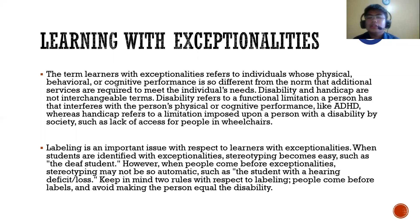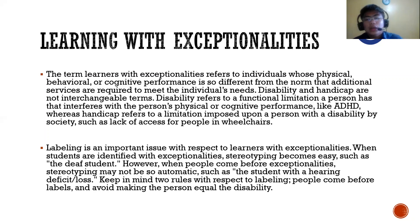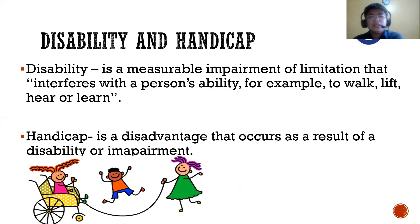Labeling is an important issue with respect to learners with exceptionalities. When students are identified with exceptionalities, stereotyping becomes easy — such as calling someone a 'deaf student.' However, when people come before exceptionalities, stereotyping may not be so automatic — such as 'student with a hearing deficit.' Keep in mind two rules: people come before labels, and avoid making the person equal the disability. Disability is a measurable impairment that interferes with a person's ability to walk, lift, hear, or learn, while handicap is a disadvantage that occurs as a result of a disability.